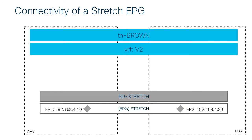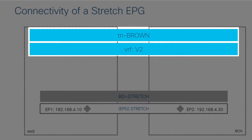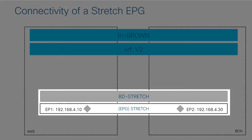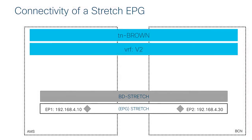In the first example, I'm going to show you the connectivity of a stretched EPG. In the video before, we had created a tenant called Brown and stretched a VRF across both sites. We also created a bridge domain called Stretch and an EPG attached to that bridge domain, also called Stretch. In my example, I'm going to connect two endpoints — endpoint one and endpoint two — and show you how they communicate in a working environment.